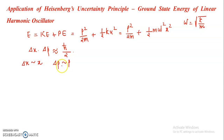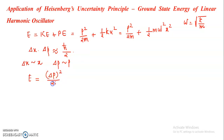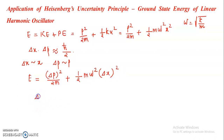So we can replace p by Δp and x by Δx in the equation for total energy. Thus E = Δp² / 2m + half mω²Δx². From the uncertainty principle, Δx · Δp ≈ ħ/2.